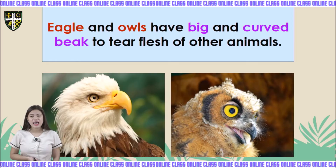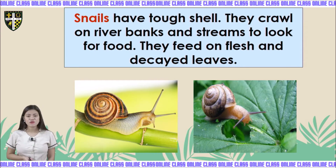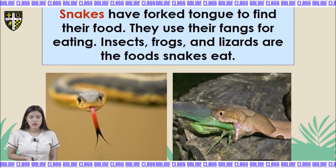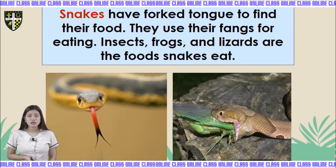Eagles and owls have a big curved beak to tear the flesh of other animals — they use their beaks to get food. Snails crawl on river banks and streams to look for food and feed on flesh and decayed leaves. Snakes have a forked tongue to find their food, and use their fangs for eating. Frogs, insects, and lizards are the food of snakes.